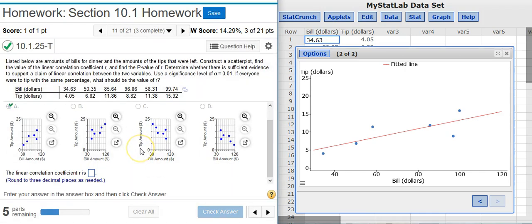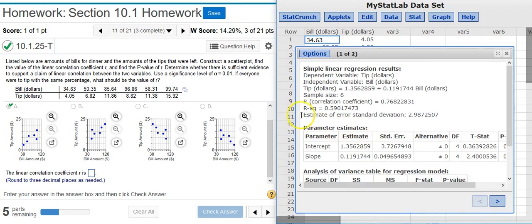Now the second part of the problem asks for the linear correlation coefficient. We already have that here in our results window. I just flipped back to the first page, and the value for R is located right here at the top.